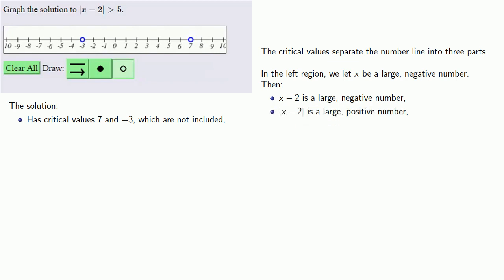The absolute value of x - 2 will be a large positive number. Since we want the inequality to be greater than 5, a large positive number satisfies the inequality. So we include the region to the left of -3.